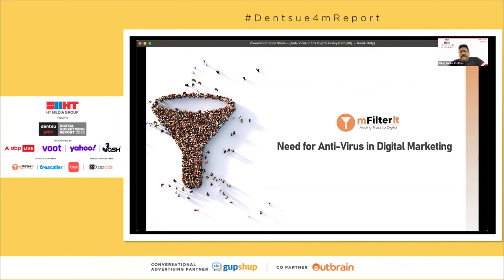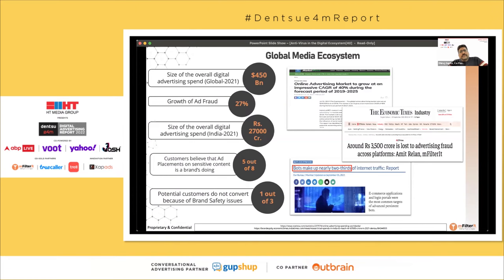We are all interacting with bots these days — chatbots, AI assistants like Alexa. Bots are able to do a lot of activity with almost similar experiences to what a human would. So why would those same bots not impact your marketing campaigns? What is the reason why these bots would say 'let me not trouble ads'? It just doesn't make sense. Bots now compromise the largest percentage of traffic online.